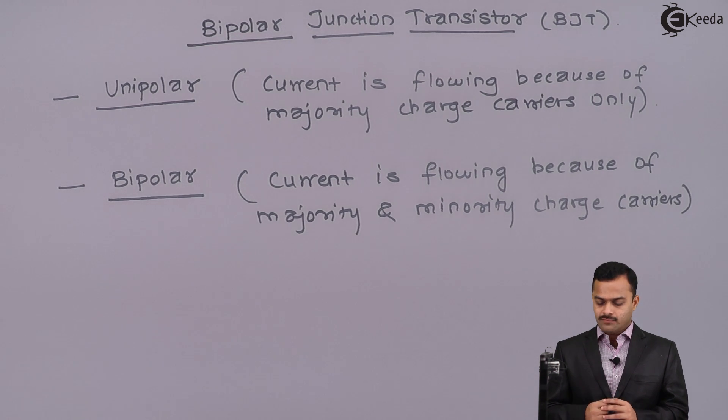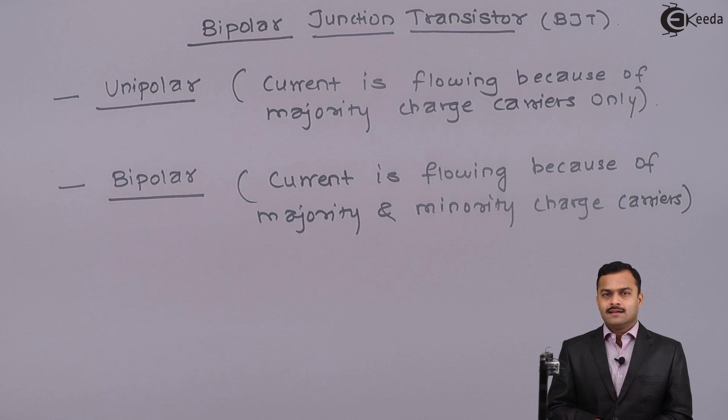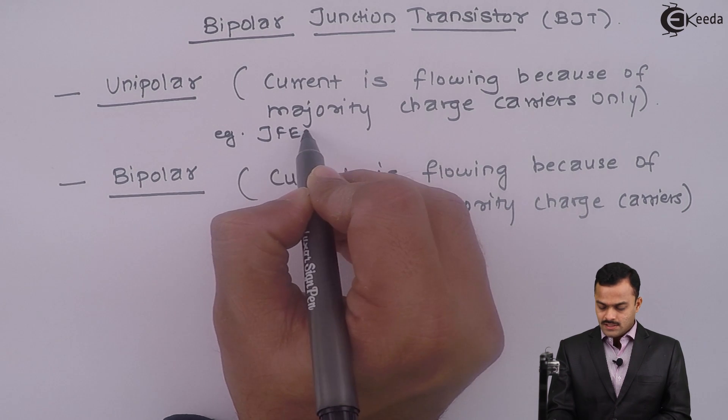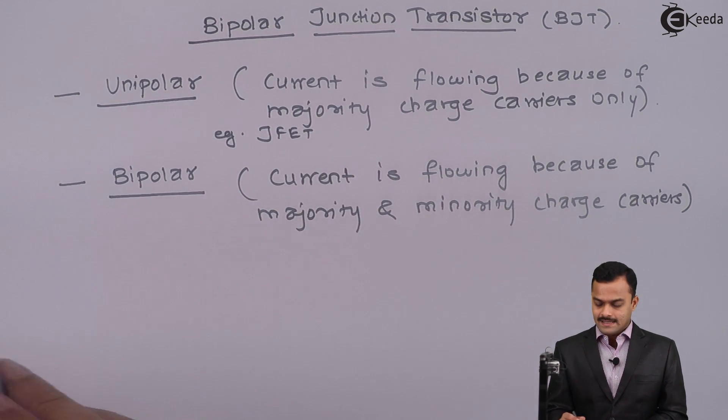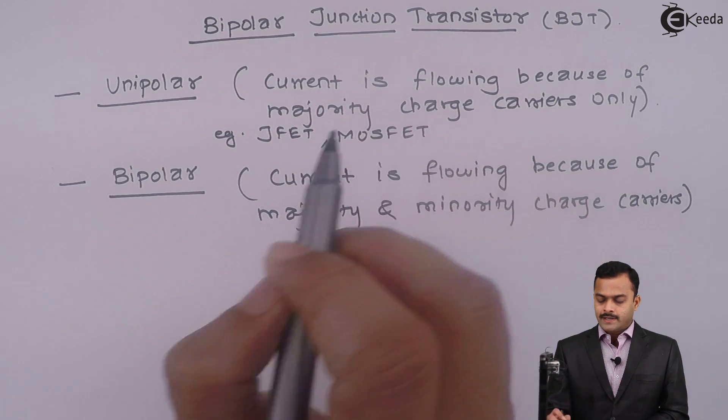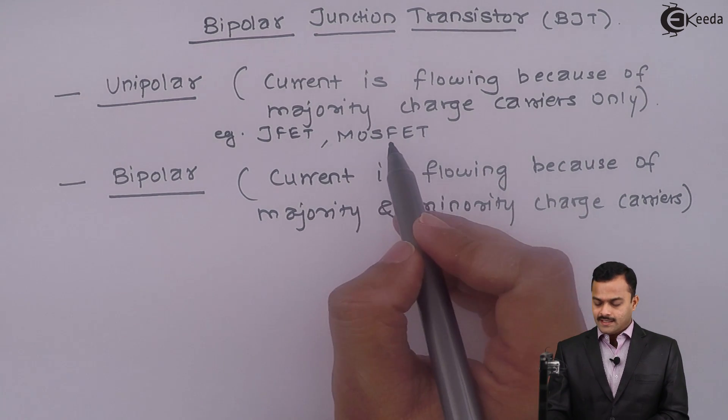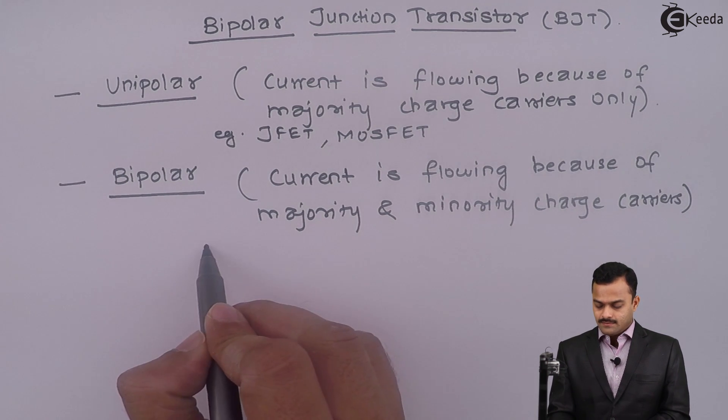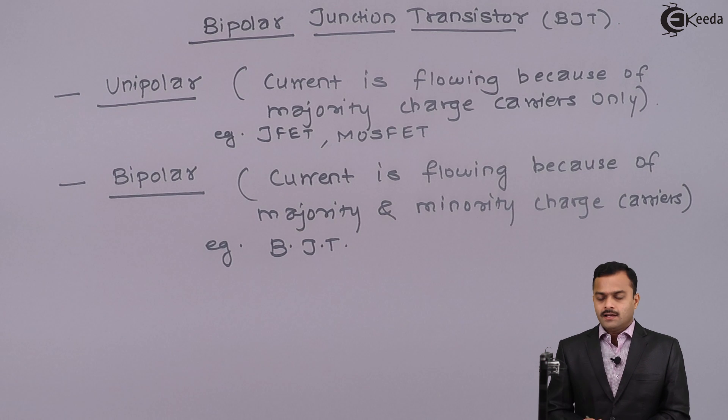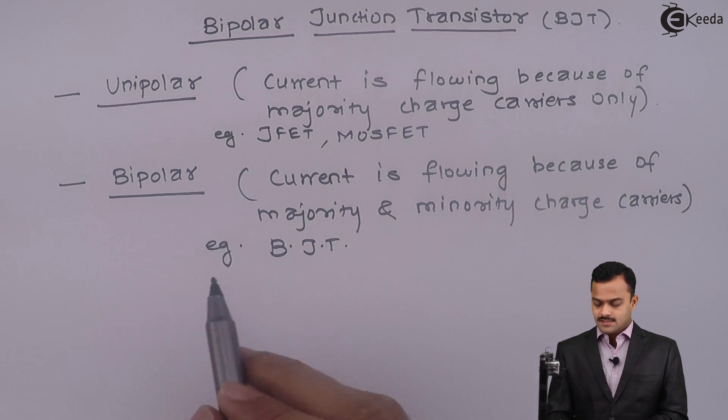But that is not the case for unipolar transistors. Examples of unipolar transistors are JFET, junction field effect transistor, or MOSFET, metal oxide semiconductor field effect transistor, whereas bipolar is simply BJT. Here we are going to focus on BJT.